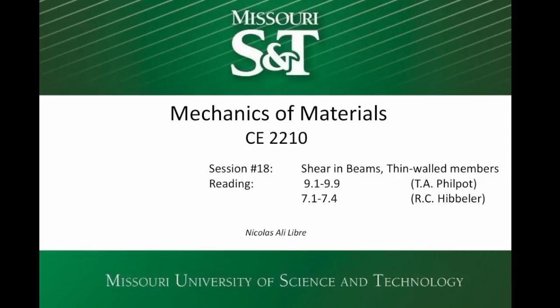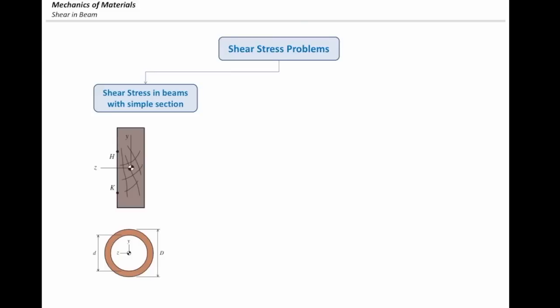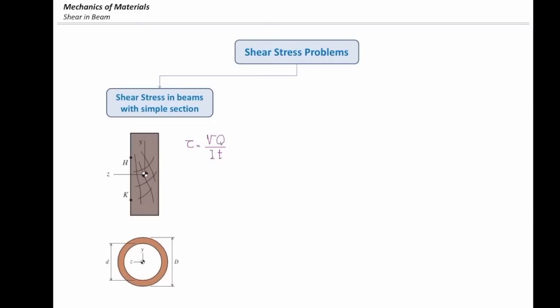To review the concept, we mentioned in the last lecture that shear stress problems can be categorized into three main categories. The first is the basic concept of simple shear stress in simple shapes, like a rectangular shape or a circular shape. For this kind of problems, we use this equation: shear stress is VQ over IT. This is the basic equation for solving this kind of problems.